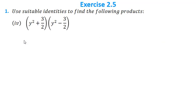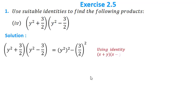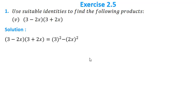The fourth problem is of the form (x + y)(x − y) = x² − y². We write it as (y²)² − (3/2)² = y⁴ − 9/4. The fifth problem is (3 − 2x)(3 + 2x), which is again in the form (a − b)(a + b) = a² − b². So we get 3² − (2x)² = 9 − 4x².